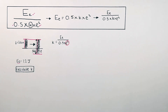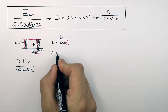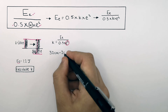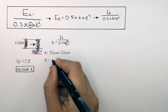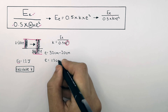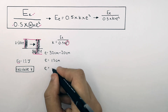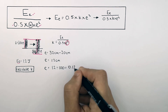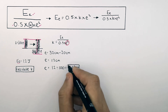So how do we work out e squared? We've got the final length, which is 32 centimetres, and we're going to minus the initial length of the unstretched spring, which is 20 centimetres. So we now have the extension, which is 12 centimetres. But we want e, the extension, in metres. So you divide 12 centimetres by 100 to convert the units to 0.12 metres. So the extension is 0.12 metres.